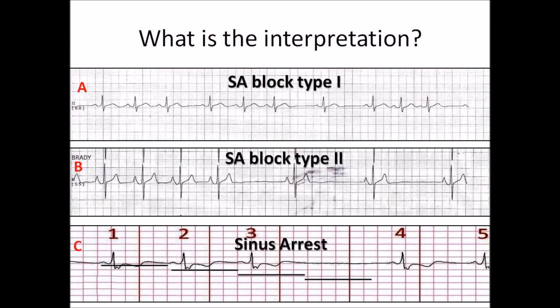So, what is the interpretation? A is sinoatrial block type 1, B is sinoatrial block type 2, and C is sinus arrest.